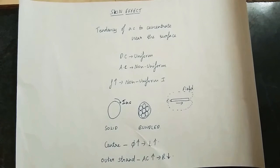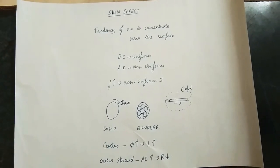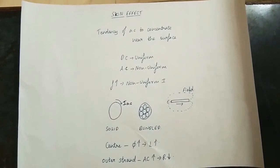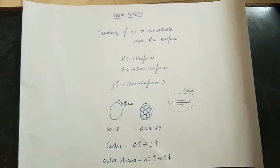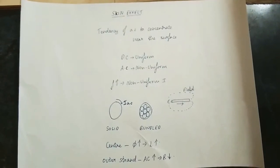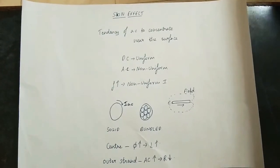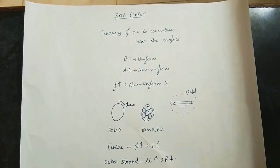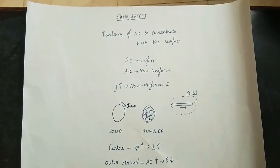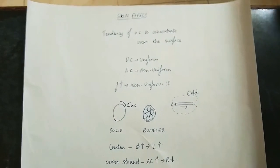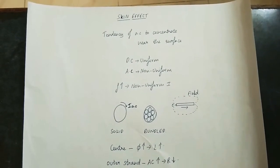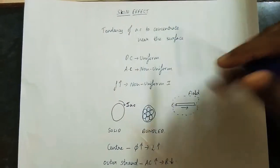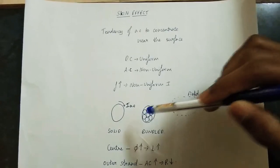It is a transmission line. We can learn about a wire and it is a conductor. We can use a single conductor, or a stranded conductor. It is a solid conductor. It is a stranded conductor. Here comes a bundle of conductors — it is a valid kind to prevent skin effect.